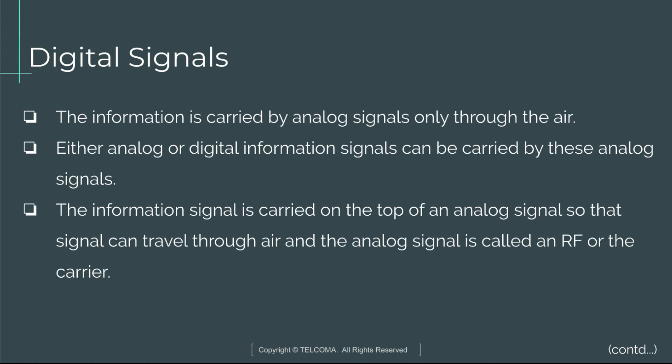The information is carried by analog signals only through the air. Either analog or digital information signals can be carried by these analog signals. The information signal is carried on top of an analog signal so that the signal can travel through the air, and that analog signal is called an RF signal, or the carrier.